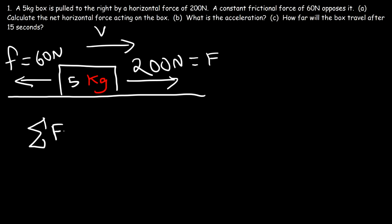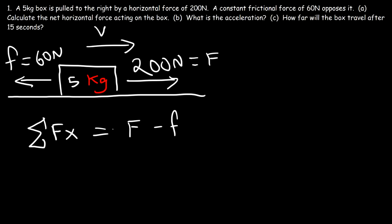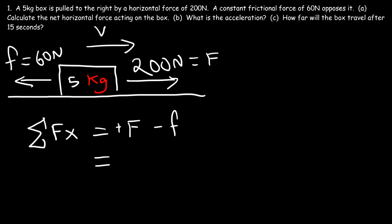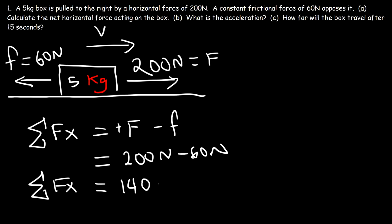The net force in the x-direction is going to be equal to F. Because this is directed in the positive x-direction, this F is positive. Now this one is directed in the negative x-direction, so it's going to be negative f. The net horizontal force is the difference between these two forces: 200 minus 60, which equals 140 newtons. So this is the answer to part A.